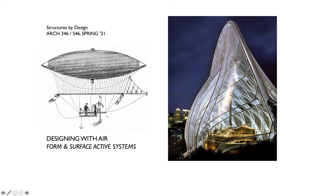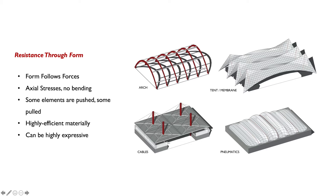The broader concept of these types of buildings is the idea that resistance is provided through form. Arches, cables, membranes, and pneumatics all have several common traits, even though they look completely different. In all of them, the form follows the forces — either compression or tension, mostly a combination of both. Axial stresses are used to reduce the amount of bending, making them materially very efficient. Some elements are pushed and some are pulled, but all are highly efficient materially because of those axial stresses.